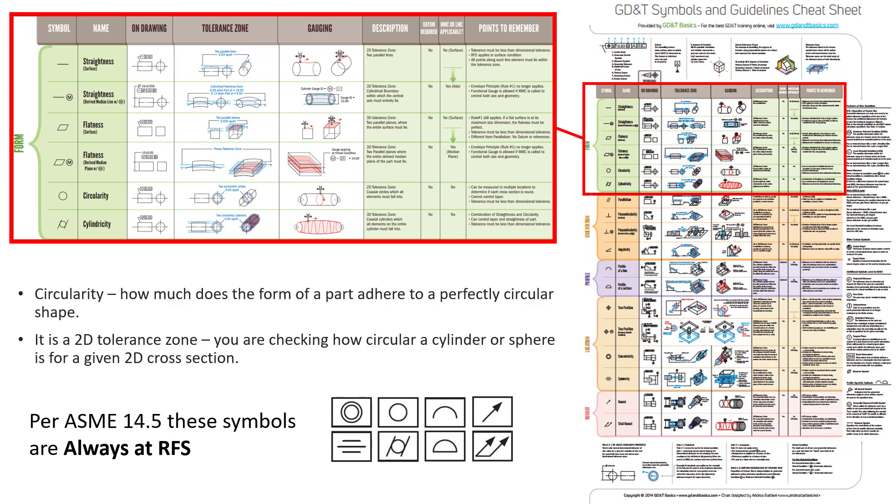So the way that is defined in the standard and what we show in our course is circularity is really how much a shape or the part adheres to a perfect circular shape. A lot of times this is called roundness by people in the industry. In the ISO standard, it is roundness. But whether you call it roundness or circularity, it has the same meaning. Down here on the bottom, it says per ASME 14.5.